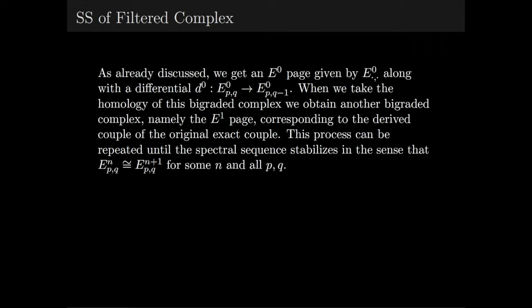We repeat this process until the spectral sequence stabilizes in the sense that one page is isomorphic to the next, term-wise. Notice that the pages will not be isomorphic as differential graded algebras because the differentials will necessarily have different bi-degree. This isomorphism only means that term-wise, for all P and Q, we get that E^N_{P,Q} is the same as E^{N+1}_{P,Q}.